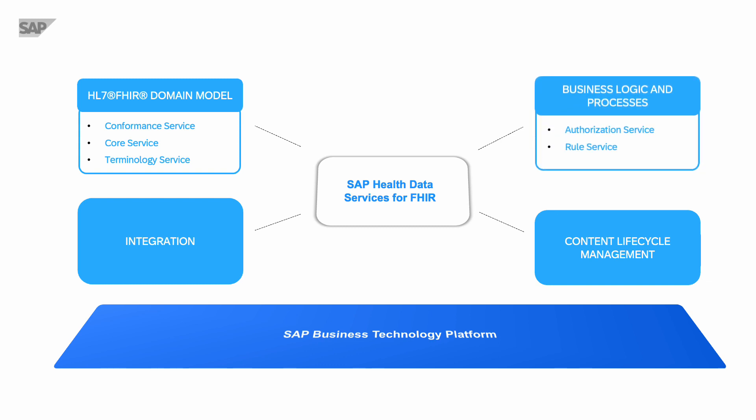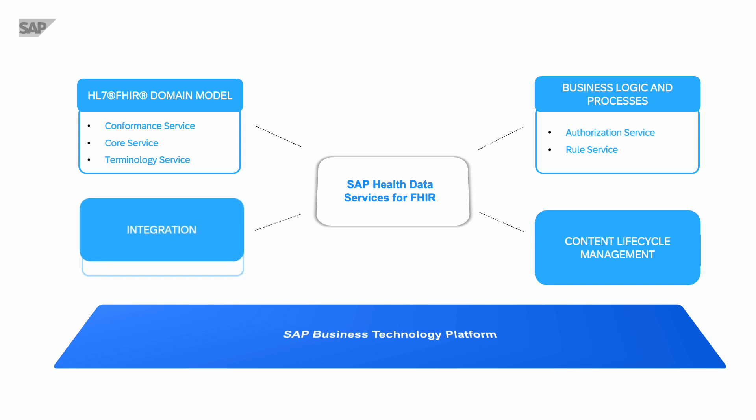It provides APIs with a strong focus on security and performance. Fine granular authorization and access management can be achieved based on literally any information of a FHIR resource. It is compliant with data privacy and protection regulations such as GDPR. It comes with a rules service that allows you to represent business logic and gives you the flexibility to adapt to ever-changing rules and regulations.